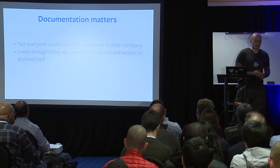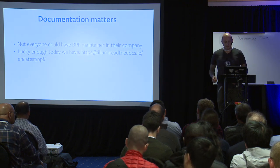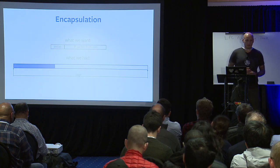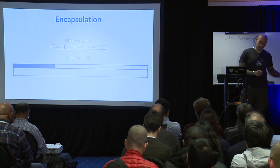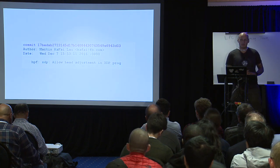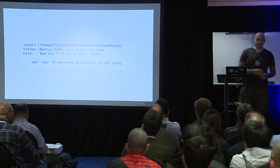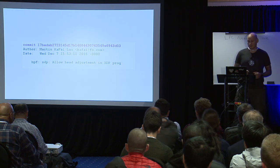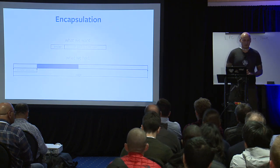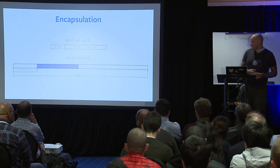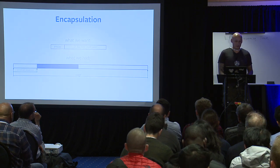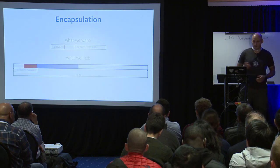We started looking into the BPF infrastructure to figure out what was missing to build our load balancer. First: encapsulation. The way XDP worked at the time, it allocates a page per packet but writes the packet at the beginning of the page, leaving very little headroom for encapsulation. Martin came up with the idea to start the packet at a specified offset and add a helper to move the pointer to the start of the packet — bpf_xdp_adjust_head. By default the XDP packet headroom is 256 bytes for most drivers (192 for Intel). With this helper you can move the pointer and have headroom for encapsulation.